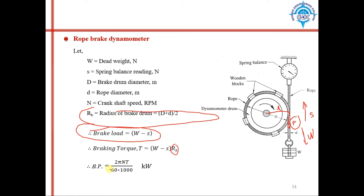Brake power equals 2πNT/60, which is the T·ω equation where ω = 2πN/60. With the torque and number of revolutions known from the dynamometer experiment, brake power can be calculated.